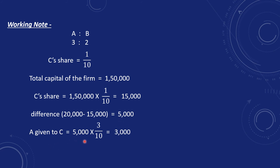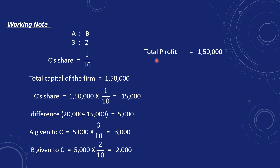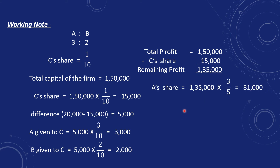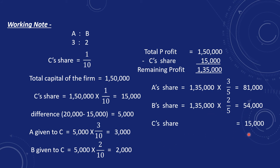Total profit is Rs. 1,50,000. C's share = 1,50,000 × 1/10 = Rs. 15,000, but requirement is Rs. 20,000, so deficiency is Rs. 5,000. A contributes: 5,000 × 3/5 = Rs. 3,000 given to C. B contributes: 5,000 × 2/5 = Rs. 2,000 given to C. Remaining profit of Rs. 1,35,000 is distributed — A gets 1,35,000 × 3/5 = Rs. 81,000 and B gets 1,35,000 × 2/5 = Rs. 54,000.